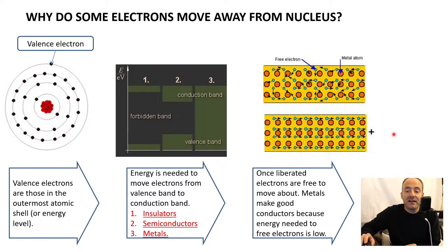However, if we apply an electric field, which we'll talk about more later, then those electrons are going to be attracted to it. Electrons have a negative charge, so if we place a positive charge here, they'll be attracted towards it.